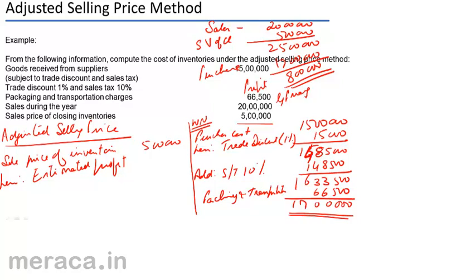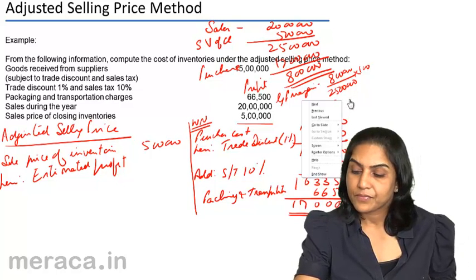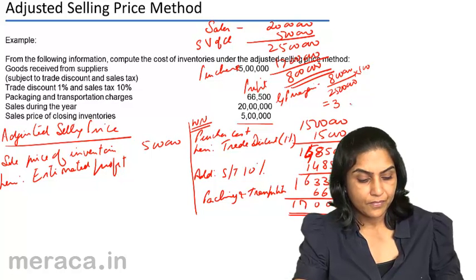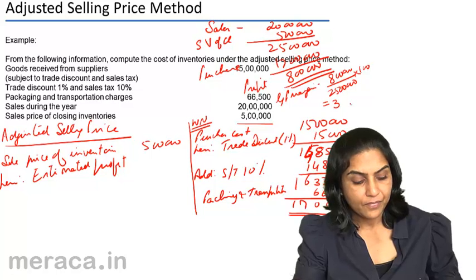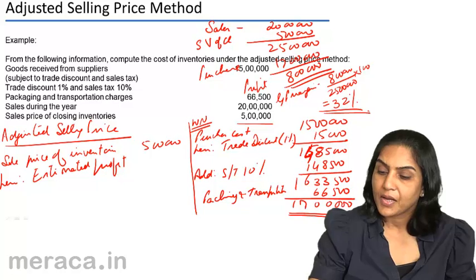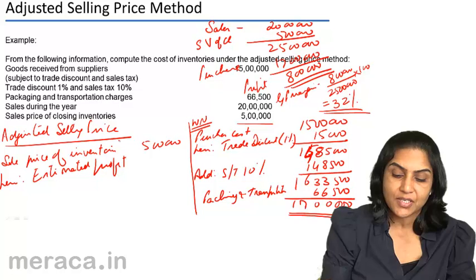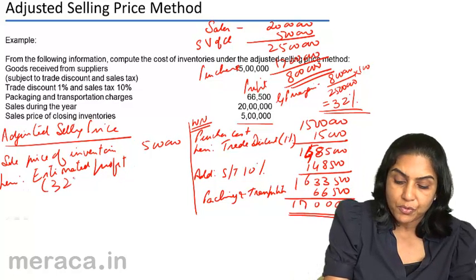We get a profit of 8 lakhs. Therefore, the GP margin: we have made a gross profit of 8 lakhs on a total sales value of 25 lakhs. To find the adjusted selling price, we take the sale price of inventories, which is 5 lakhs, and deduct the estimated profit, which we have now computed as 32%.